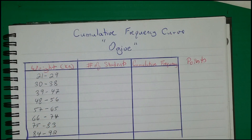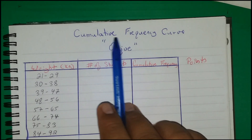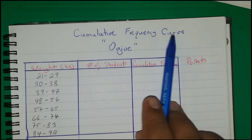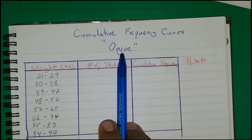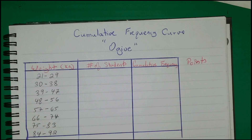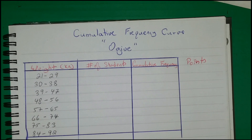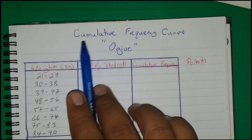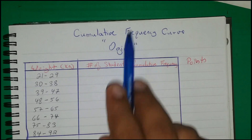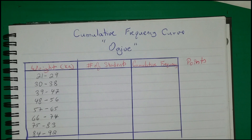Hello everyone, today we want to be working with the cumulative frequency curve, or another name for it is the ogive. So if any question or problem is asking you to draw or construct a cumulative frequency curve or the ogive, both of them mean the same thing. Right here I have a table.